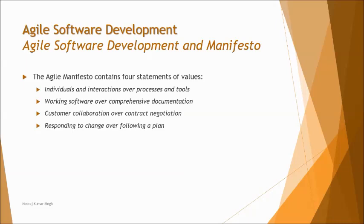We have four major business values, generally known as the agile manifesto: individuals and interactions over processes and tools; working software over comprehensive documentation; customer collaboration over contract negotiation; and responding to change over following a plan. Let's understand each one of them in more detail.